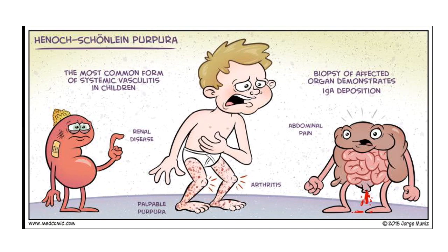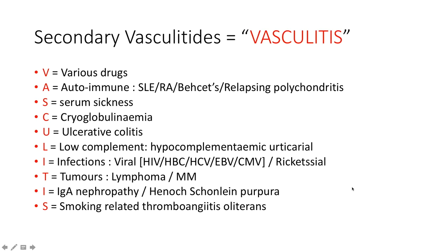Thanks to drgohary.com and George Menis at mickoring.com for helpful resources. Henoch-Schönlein purpura is the most common form of systemic vasculitis in kids. It is characterized by renal disease, palpable purpura with classic distribution over the buttock area, arthritis, and abdominal pain. Biopsy of affected organs demonstrates IgA deposition.